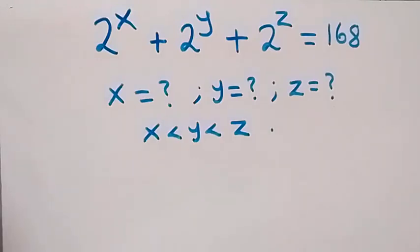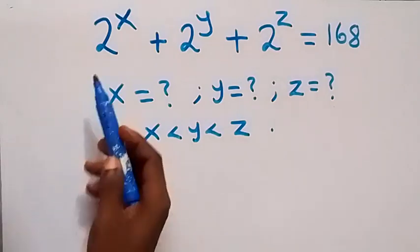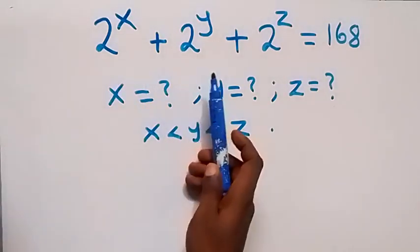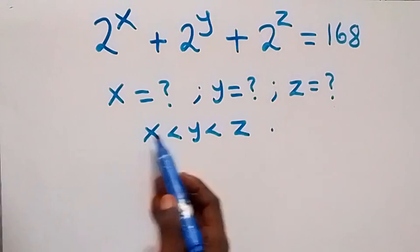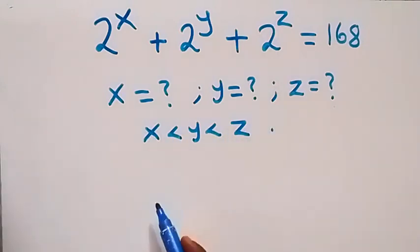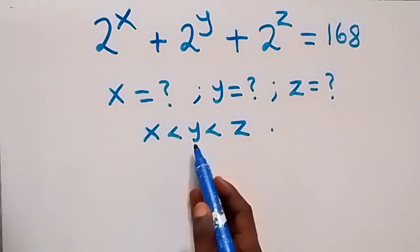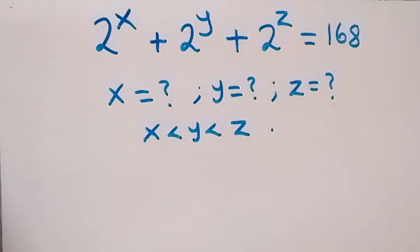Hello, you are welcome. How to solve this nice algebraic equation: we have 2 raised to power x plus 2 raised to power y plus 2 raised to power z equals 168. We want to find the value of x, y, and z, where x is less than y and y is less than z.